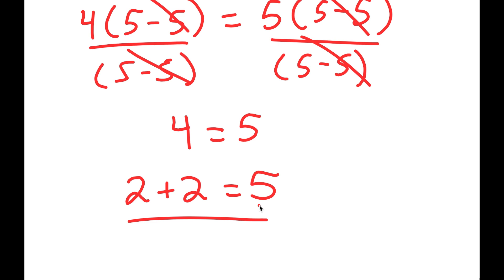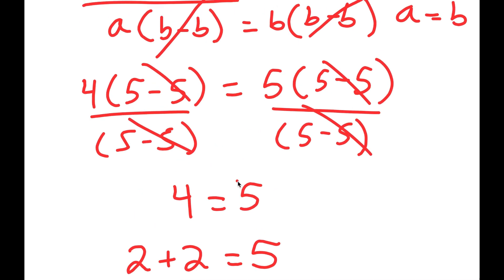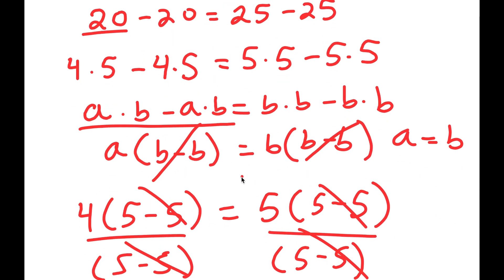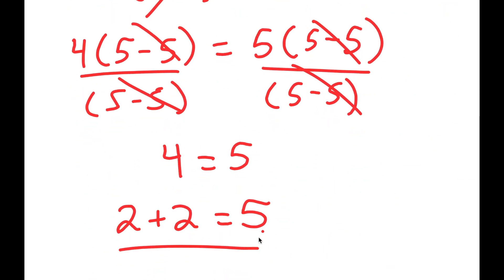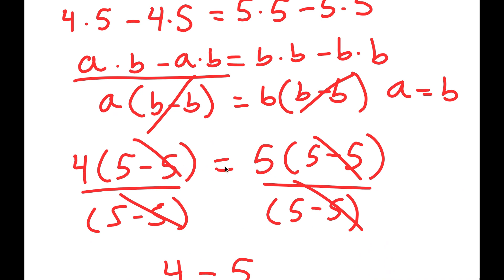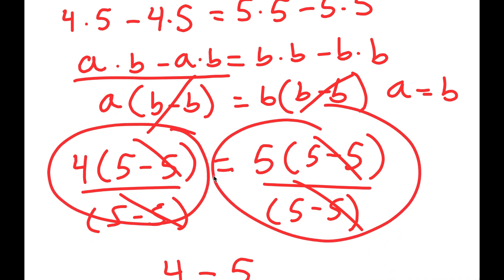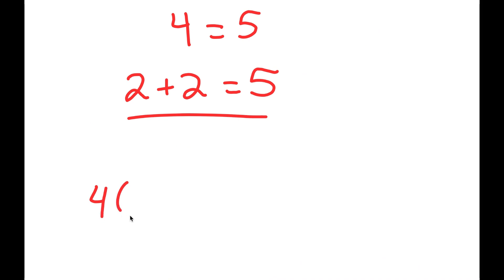Now I know what you're thinking — this is mathematically incorrect, right? How can 2 plus 2 equal 5 when 2 plus 2 is equal to 4? Well, look back and try to figure out where I made an error. The error is actually right here, in this step, where I divided both sides by 5 minus 5.